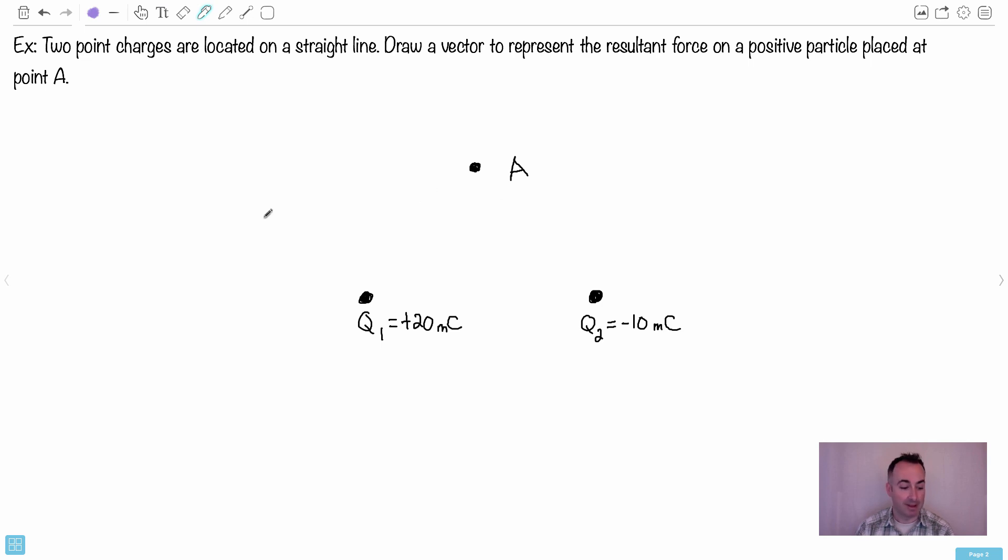So here we go. We have an example. So we have two point charges, and they're located on a straight line. So you can see this is point charge Q1, and this is point charge Q2. Notice Q1 is plus 20, and these are mC, so that'll be millicoulombs. That'll be 10 to the minus 3 coulombs. And then we have Q2, which is negative 10.